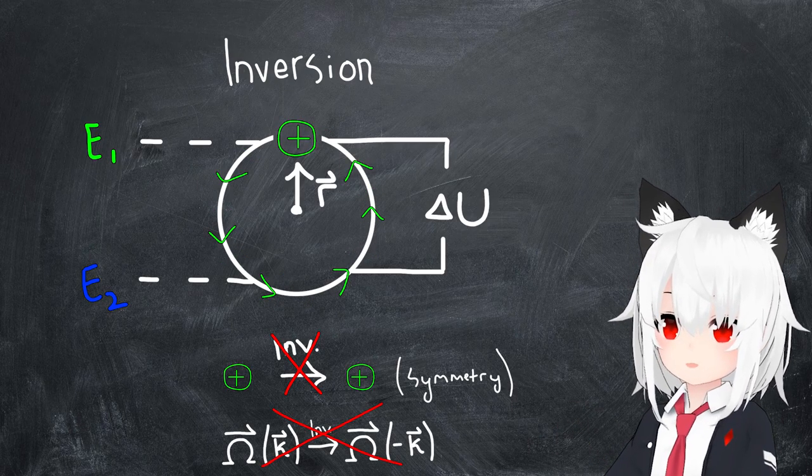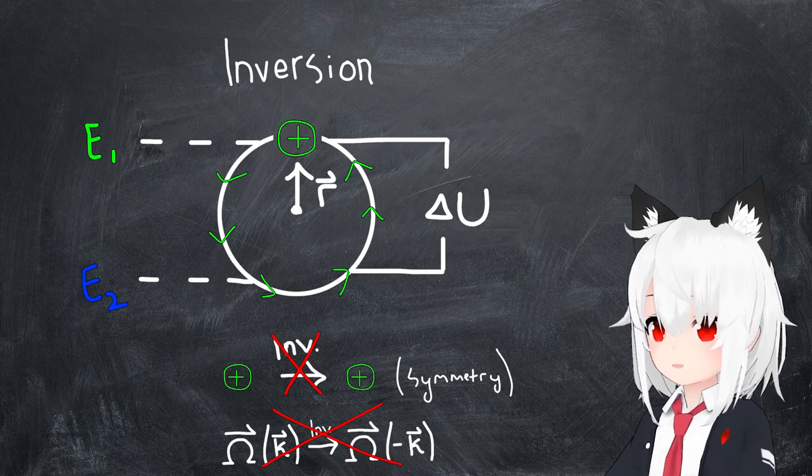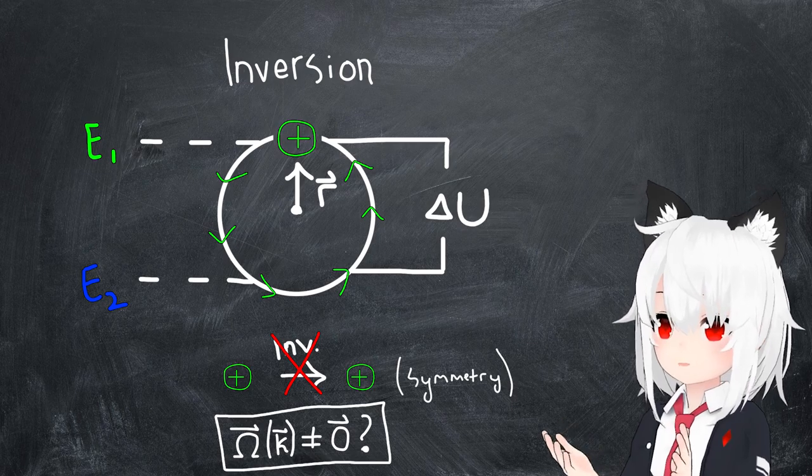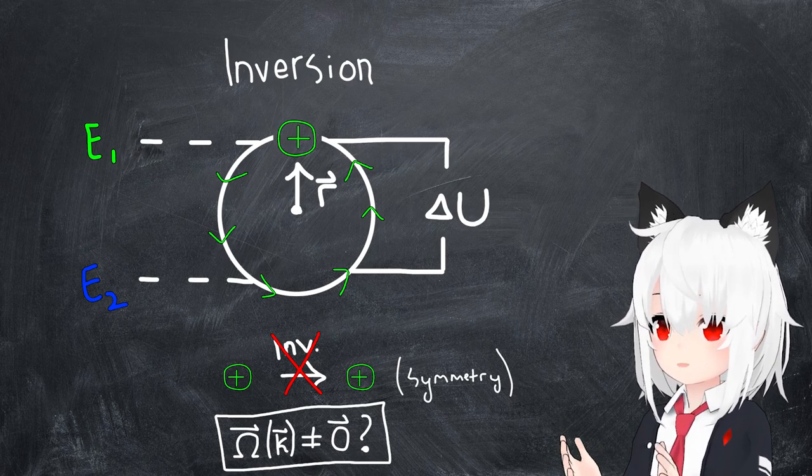The result would be a falsification of our originally derived statement that the Berry curvature should be equal to itself under the inversion operation, potentially allowing it to take on non-zero values.